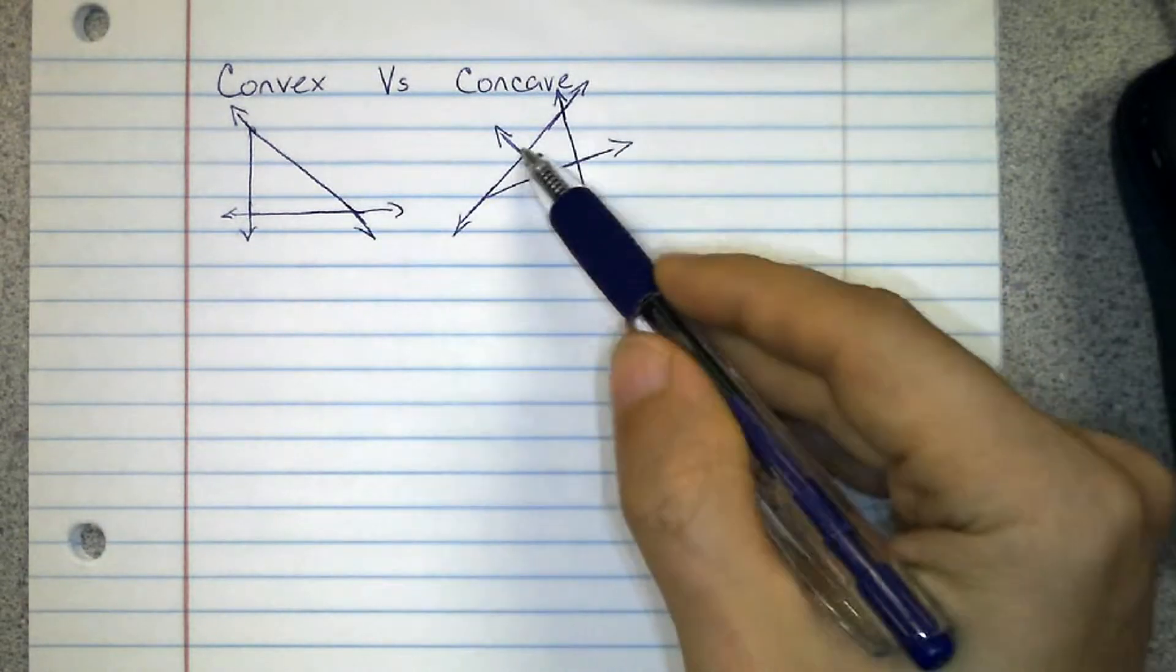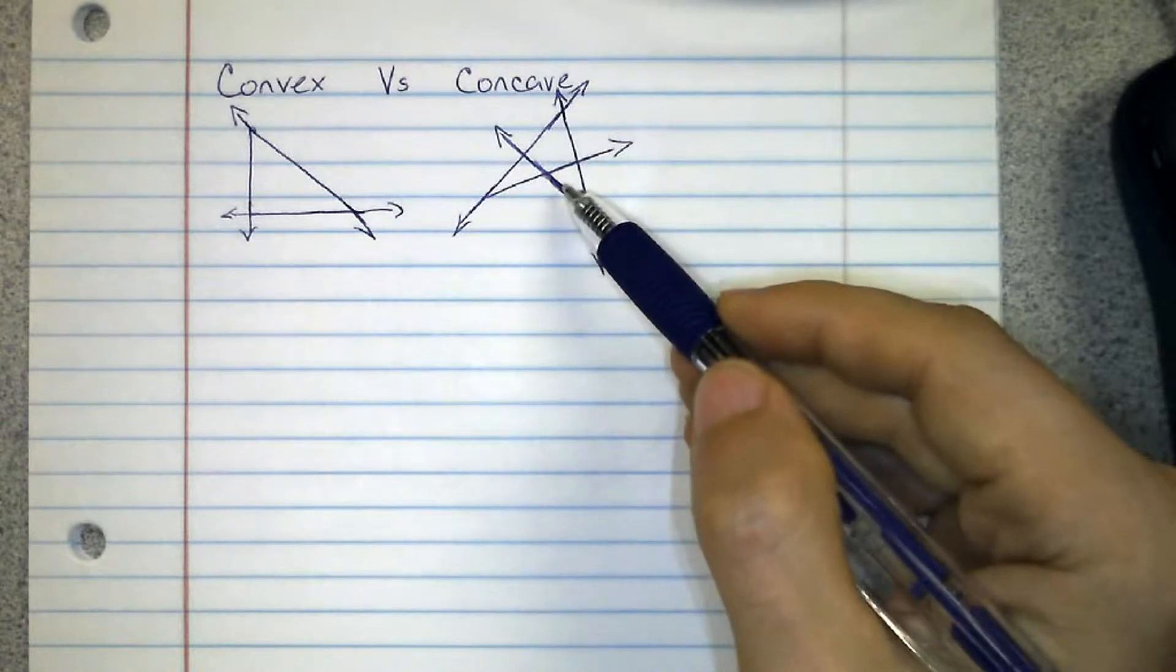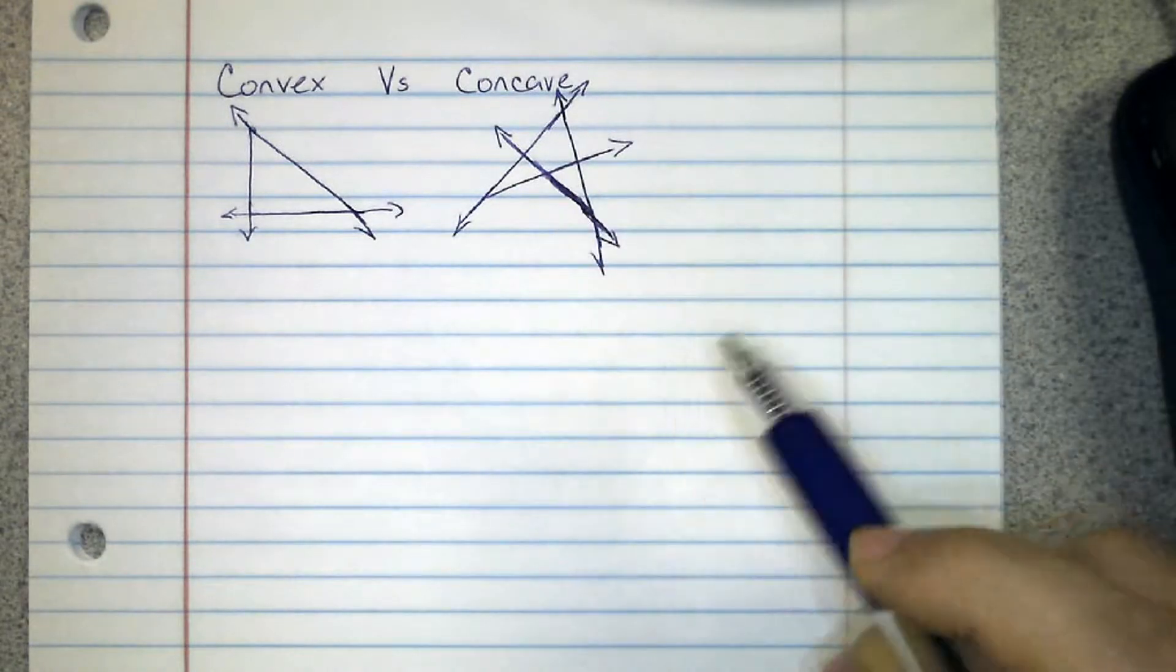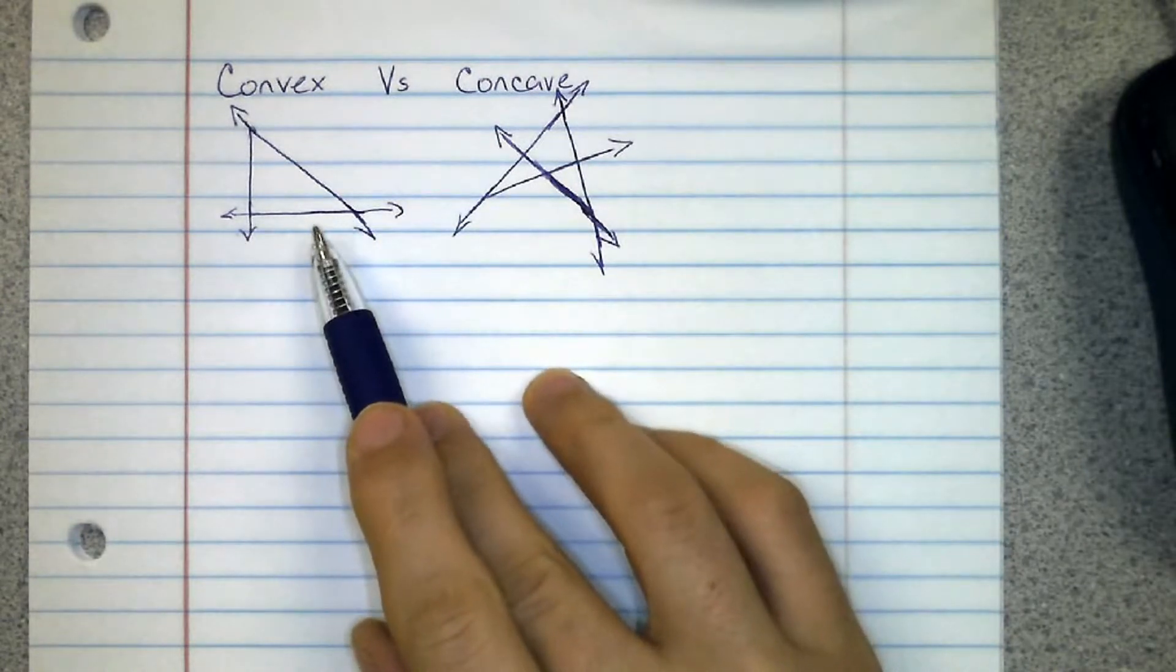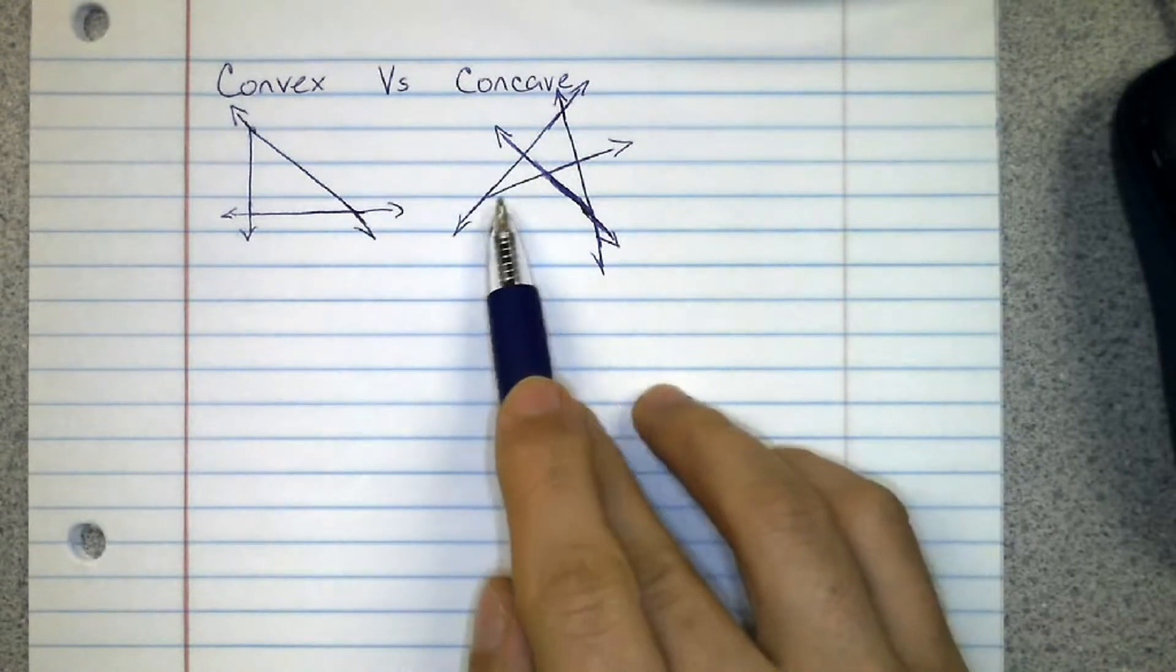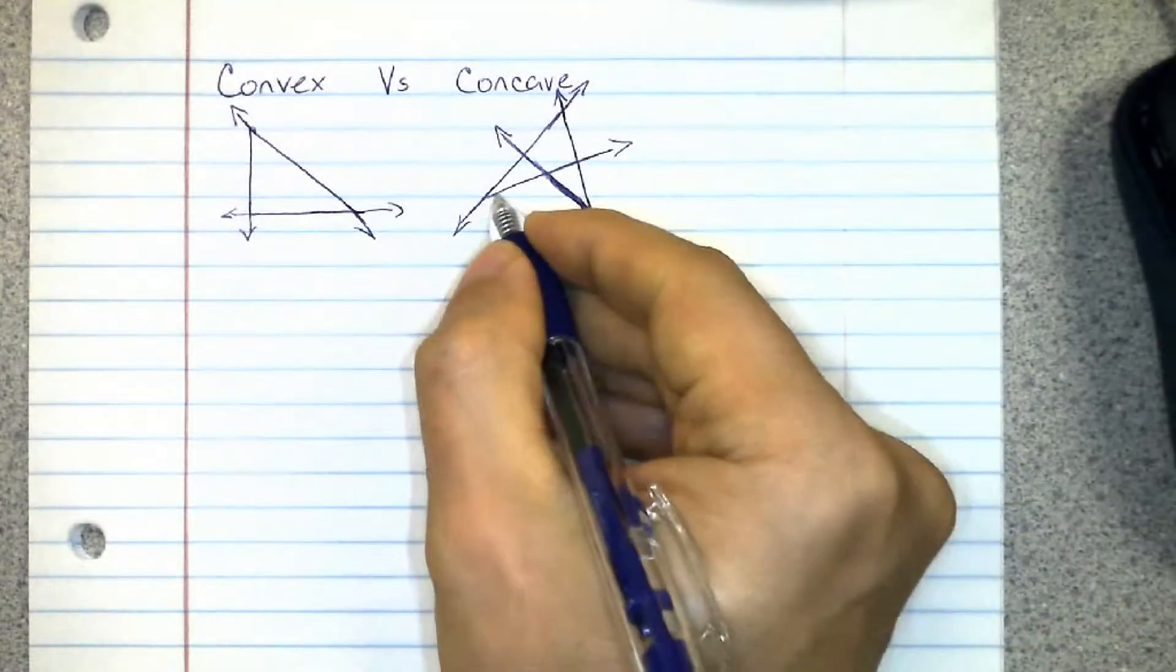Look what happened here. These two segments when I extended them into lines cut right through the polygon. This is what we call concave. So that's the difference: convex if you extend the segments into lines it doesn't pass through the actual interior.